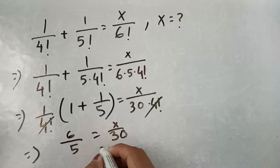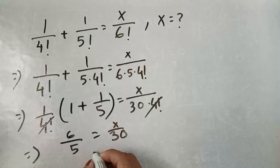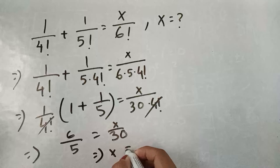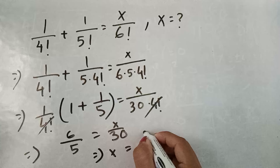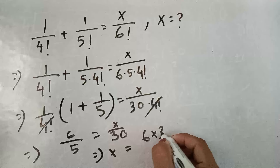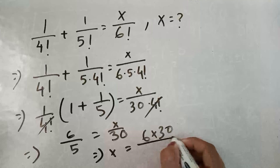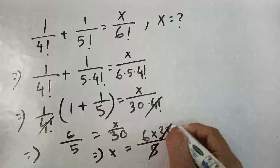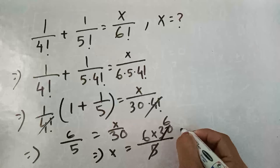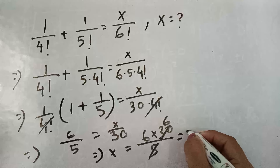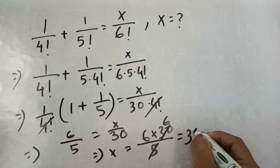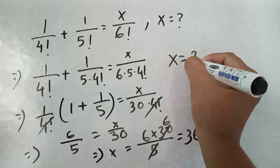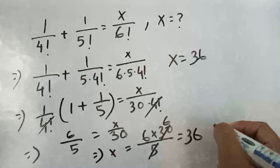Therefore, we can write x equals 6 into 30 by 5, which comes to 36. So the value of x is 36.